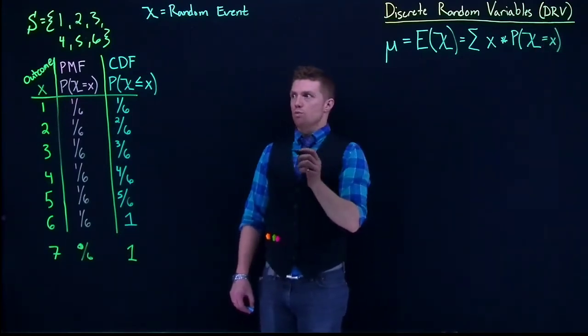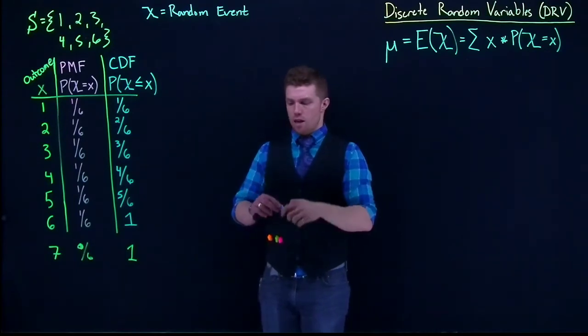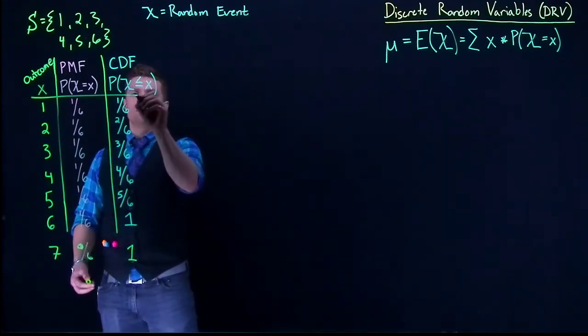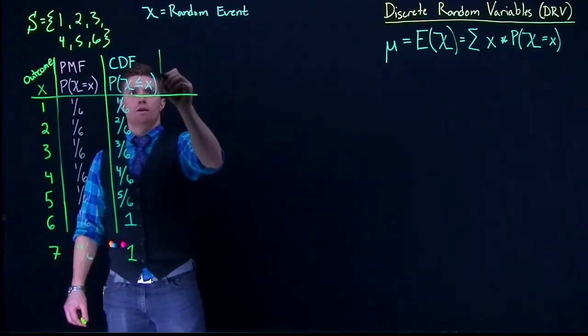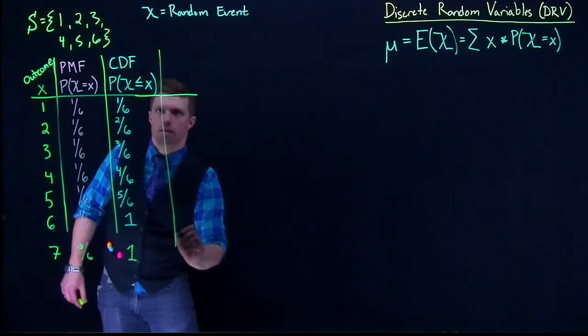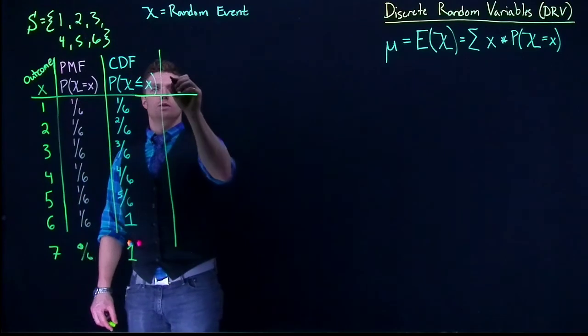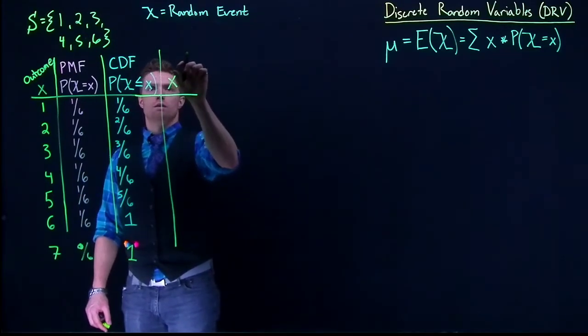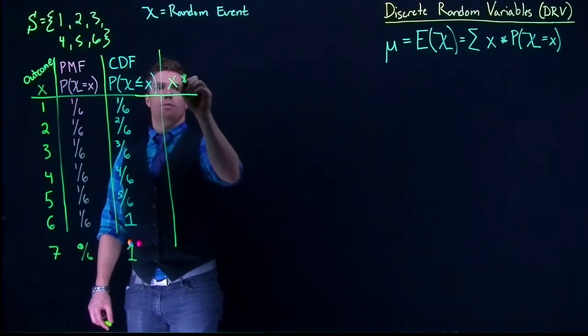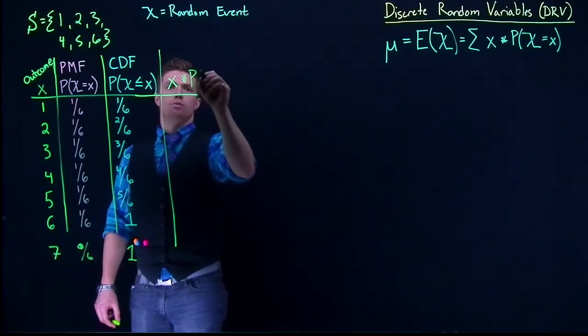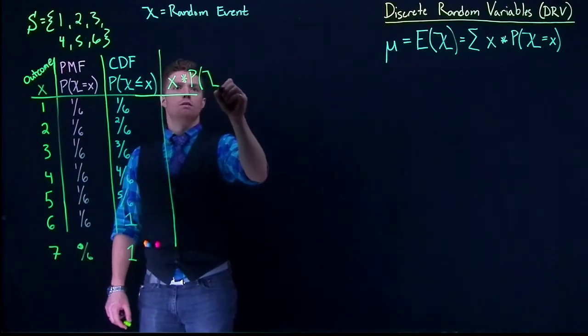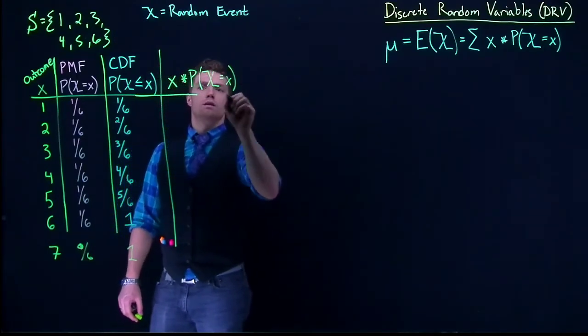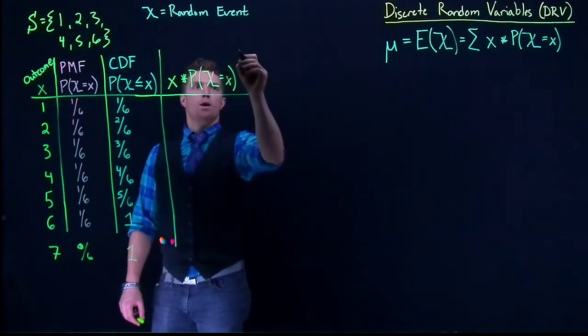So we could take this table and just expand it out and do the math really quick. All right, here we go. So let's work on finding in this column, we're going to do x multiplied by its probability of success.